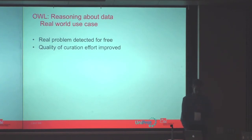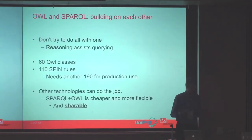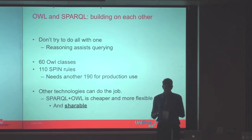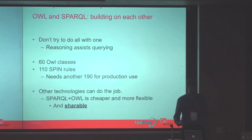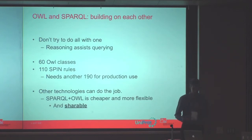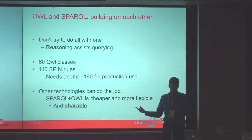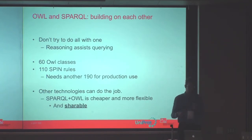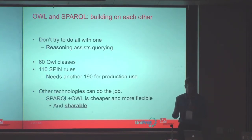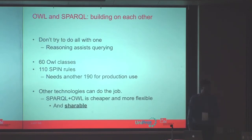In conclusion, OWL and SPARQL work together and are mutually beneficial — reasoning helps make curation easier. We have about 60 OWL classes and currently about 110 rules, which should be quite a lot more. Other technologies like key-value stores can do this job, but SPARQL and OWL make it cheaper. And crucially, you can share it afterwards — passing a SPARQL query is much easier than sharing PL/SQL from an Oracle database when someone else is using MySQL. It's the only shareable quality assurance solution.